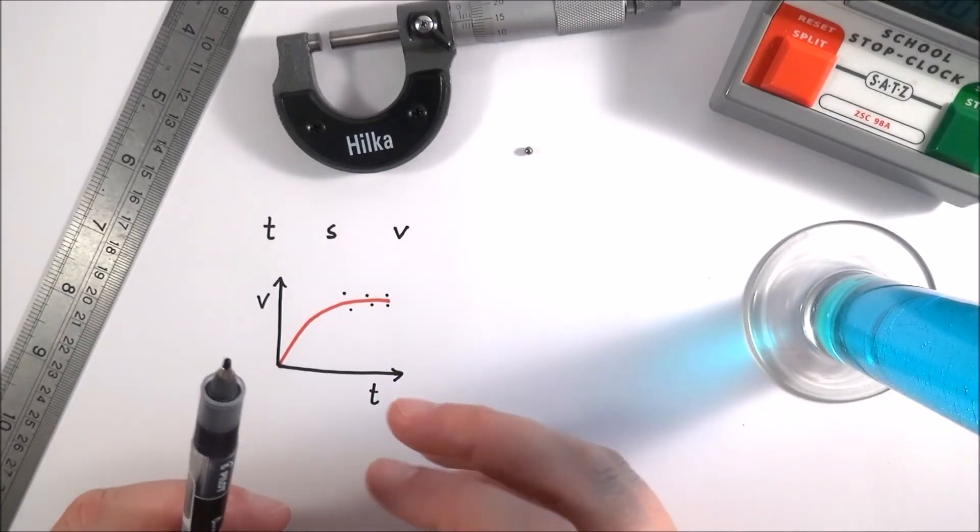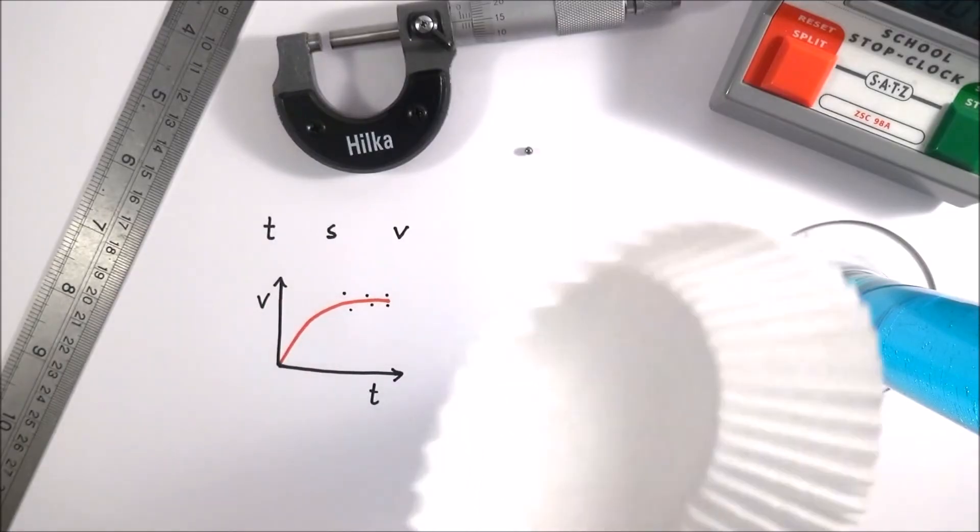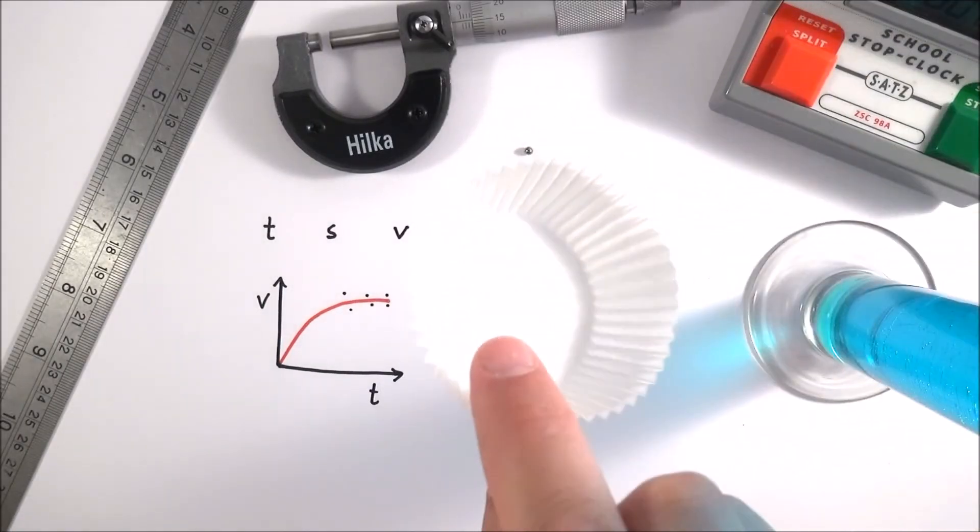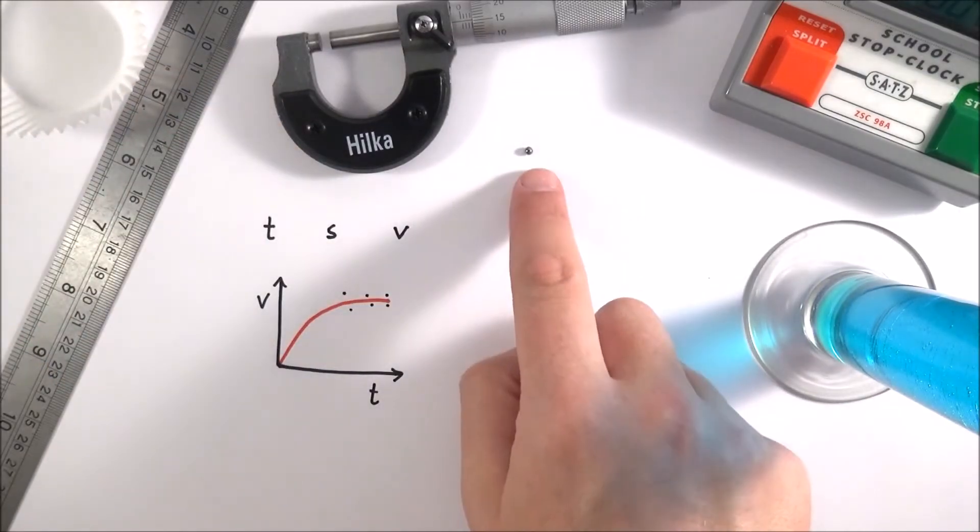Obviously depending on the stuff you have at your school, there's so many different variations you can do. You still might be using a bun case and you can do the same thing. You could always film this bun case falling through the air - that's quite a nice straightforward one to do. You can also investigate things like different size ball bearings.